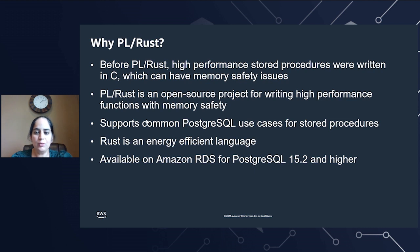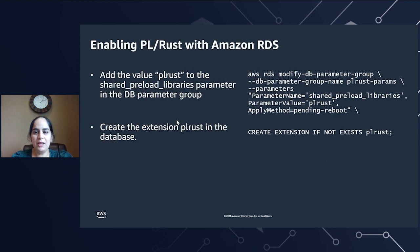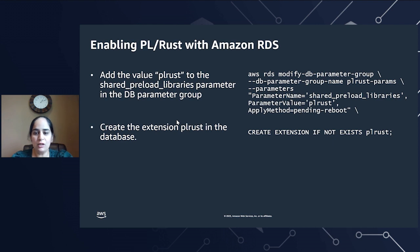PL Rust is open source and is available on all database instances in Amazon RDS running PostgreSQL version 15.2 and higher. Enabling PL Rust on Amazon RDS involves two steps. You add the PL Rust value to the shared preload libraries parameter in your database parameter group and restart your database instance to bring this parameter into effect. You can make this change using the AWS console or AWS CLI commands. After the restart, you use the simple CREATE EXTENSION command to install PL Rust in your database.